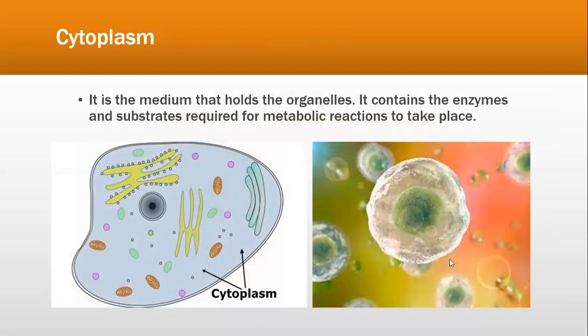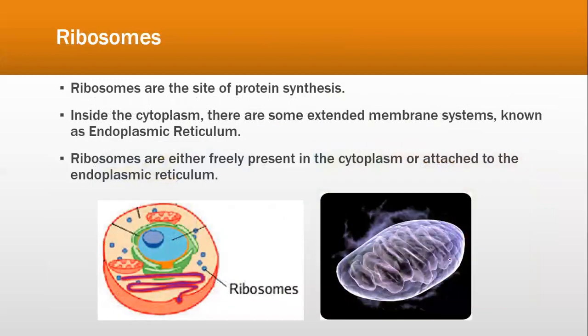Cytoplasm is the medium that holds the organelles. It contains the enzymes and substrates required for metabolic reactions to take place. Cytoplasm is the medium where all the organelles are actually floating, and it provides a medium for all metabolic reactions inside the cell. Ribosomes are the site of protein synthesis, and inside the cytoplasm there are extended membrane systems known as the endoplasmic reticulum. Ribosomes are either freely present in the cytoplasm or attached to the endoplasmic reticulum.